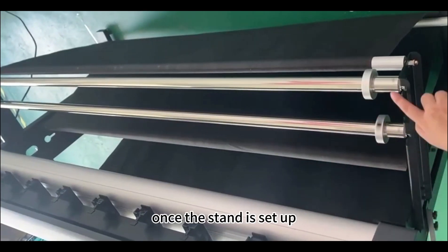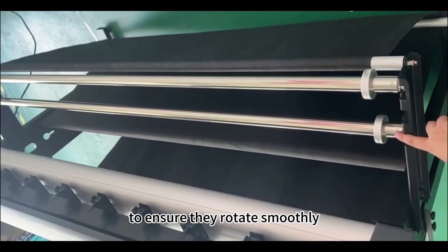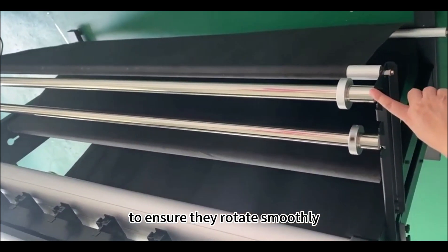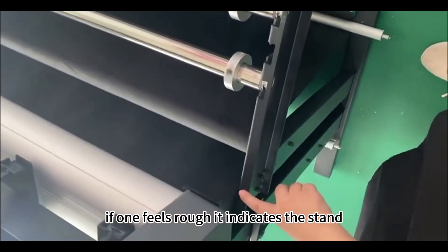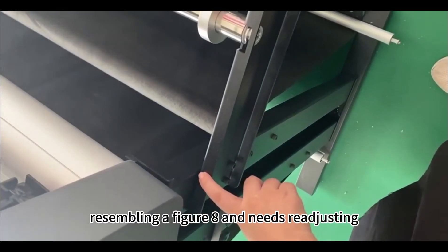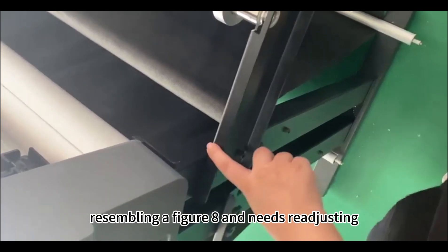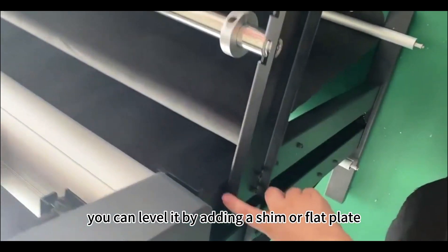Once the stand is set up, check the two rods at the back to ensure they rotate smoothly. If one feels rough, it indicates the stand might be misaligned, resembling a figure 8 and needs readjusting. You can level it by adding a shim or flat plate.